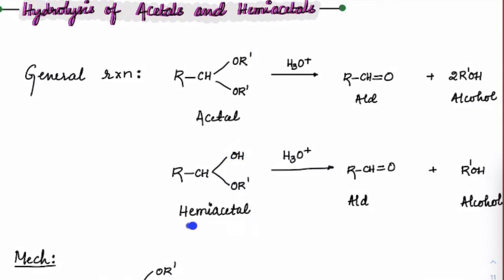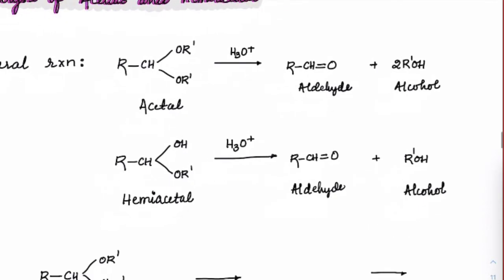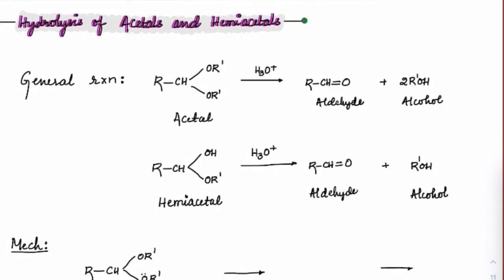If instead of one OR group we have an OH group, we call it a hemiacetal. If an acetal undergoes hydrolysis, both OR groups come out as alcohols, water gets added, and it becomes an aldehyde. If a hemiacetal is hydrolyzed, we get the same aldehyde and one mole of ROH comes out as alcohol.